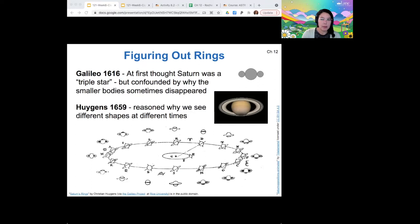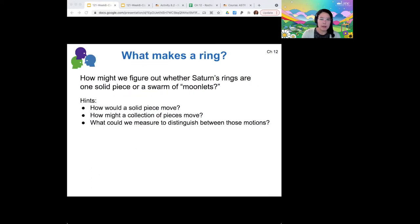And what actually are rings made of? You might assume, if you're an early astronomer, that this is sort of one solid piece, but you might also consider it could be a swarm of tiny moons that conspire together to create a ring appearance. So how might we figure out which one of these hypotheses is correct? All right, so I'm starting to see a few themes here.